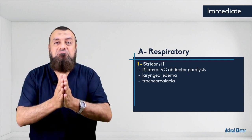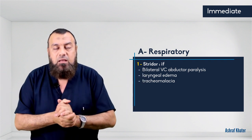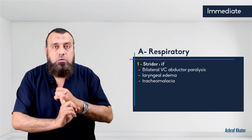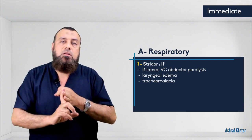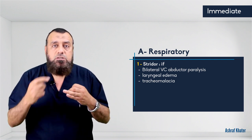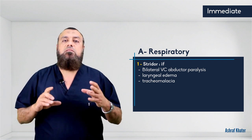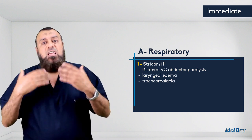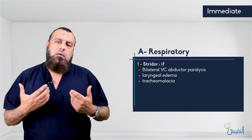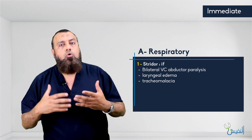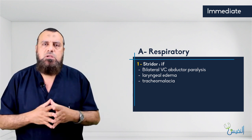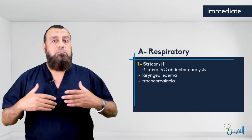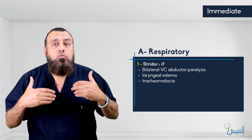After removal of a huge goiter, the trachea can collapse and the treatment is tracheostomy. To summarize, there are three causes of stridor: number one, bilateral vocal cord abductor paralysis; number two, temporary laryngeal edema due to manipulation; number three, tracheomalacia. The main treatment is tracheostomy, which is sometimes life-saving and may be removed later when cord paralysis improves.